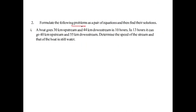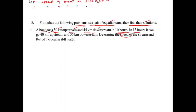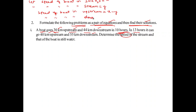Now the problem asks us to formulate pairs of linear equations and find their solutions. For the boat speed problem, let x be the speed of the boat in still water and y be the speed of the stream. The speed upstream is x minus y, and the speed downstream is x plus y.